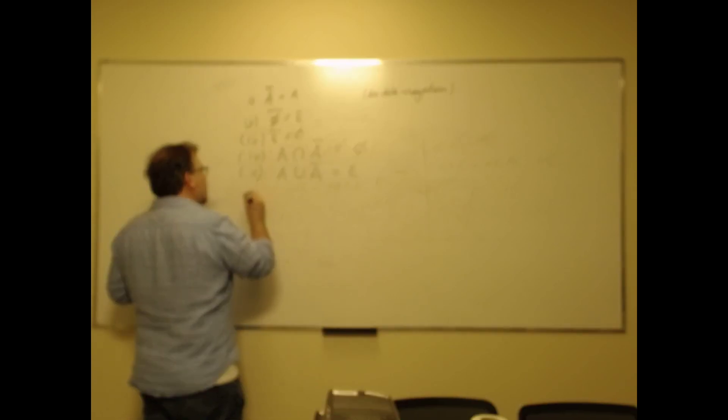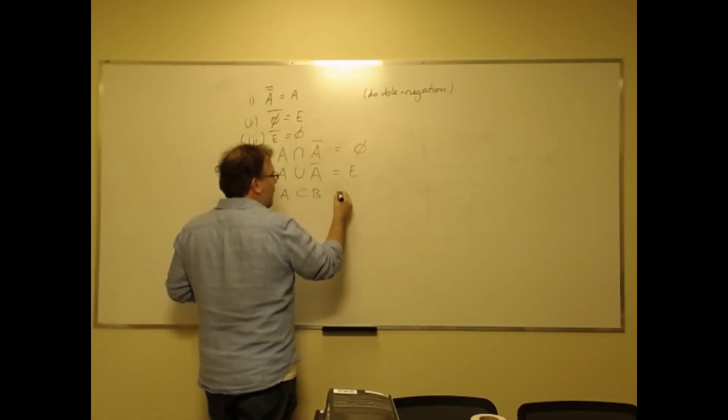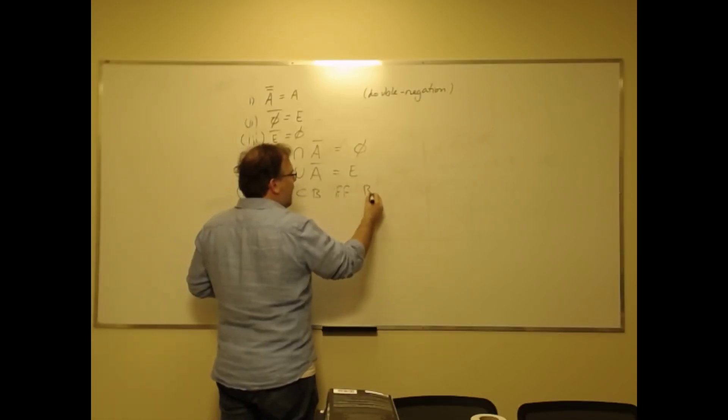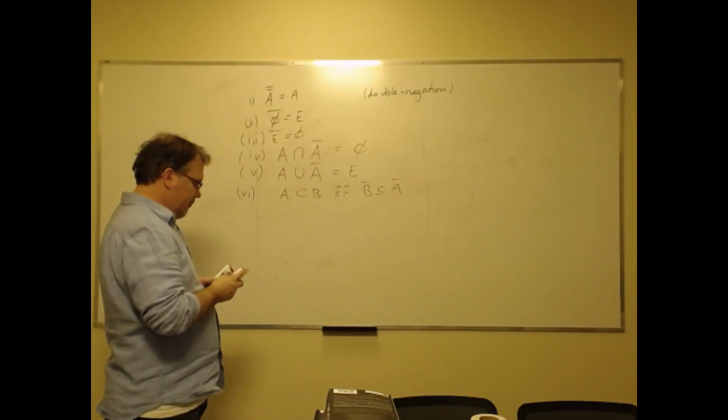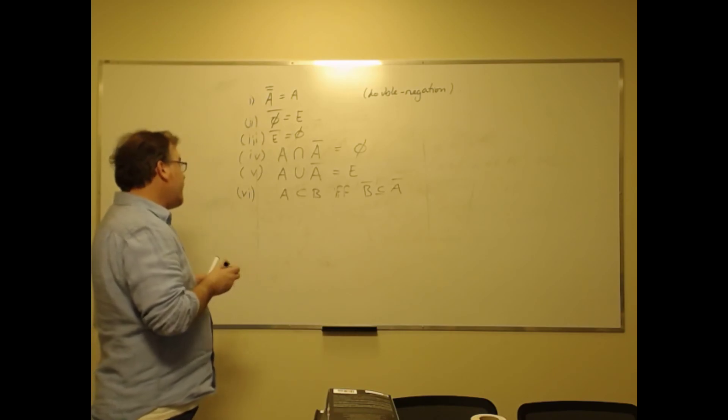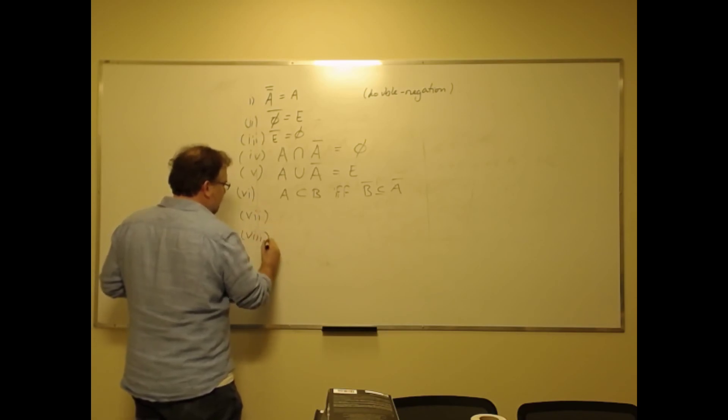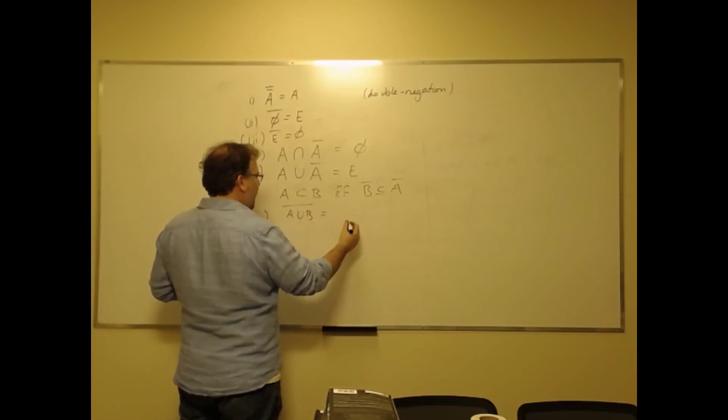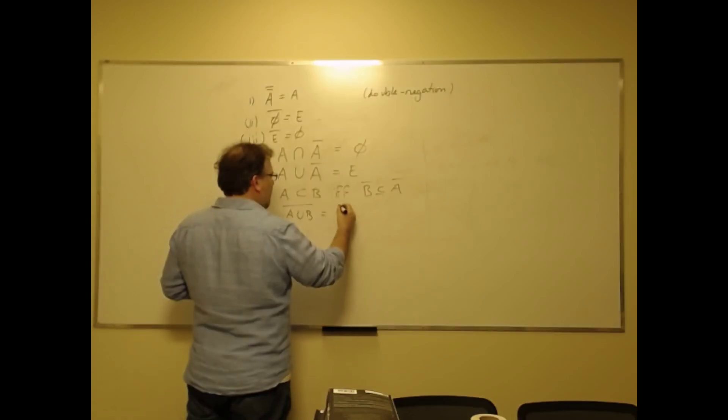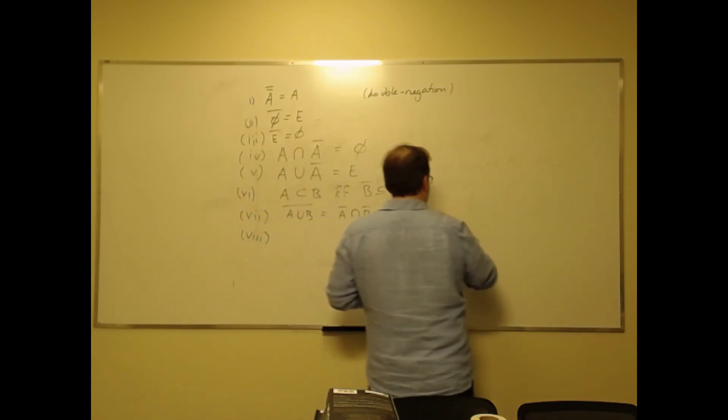Then we have something similar to our contraposition in logic: A is a subset of B if and only if the complement of B is a subset of the complement of A. And finally we have a couple familiar faces—call it, I don't know, seven and eight. The complement of A union B is the intersection of the complements. That's a De Morgan law, as you see.